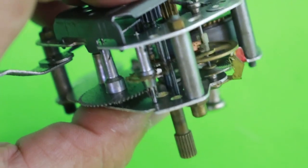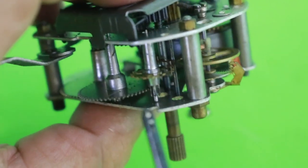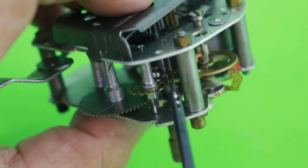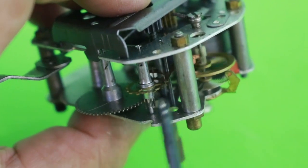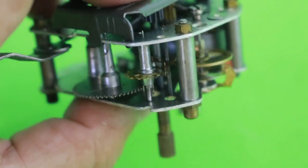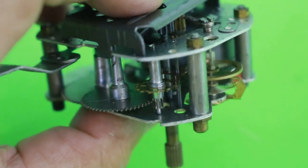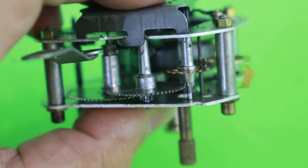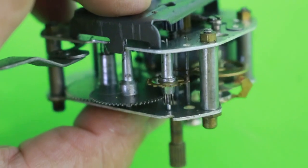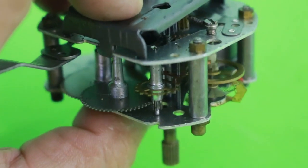Here is the escapement. It's this part here, like a fork, moving from one side to the other. You can see the different gears that move the hands of the clock, minutes and hours.